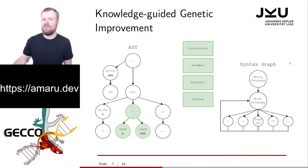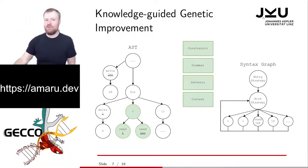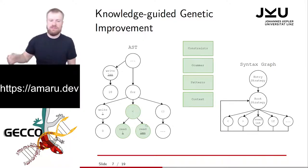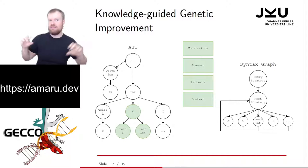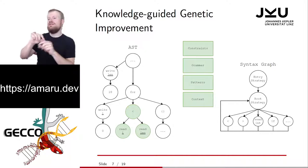The syntax graph is available both for the mutator, as seen in the example, and also for the crossover. In that case, it goes through the tree and collects all constraints — maybe applied by different patterns and different strategies, for example for reading or writing. If we read the length variable, we add a constraint that the length variable must be initialized. That can be compared at the crossover point, and we only cross points that actually make sense because they fulfill all of the requirements.